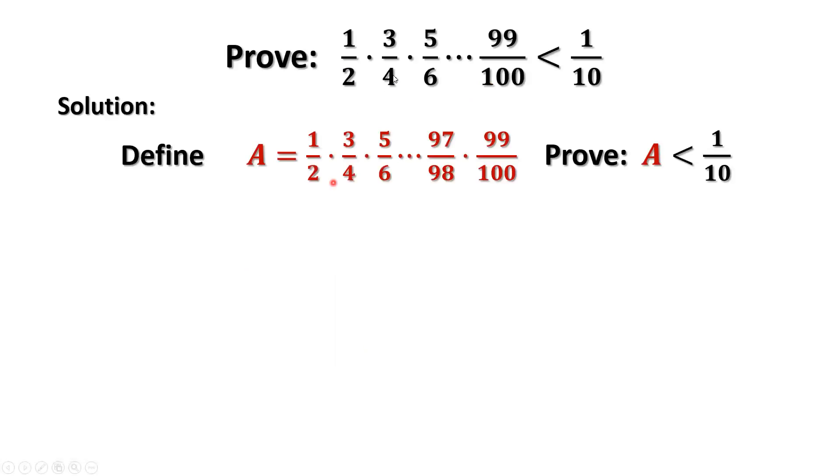Let's define the left-hand side of this inequality as capital A. The question is to prove that A is less than 1 over 10. We also define B equals 2 over 3 times 4 over 5 times 6 over 7, until times 98 over 99.